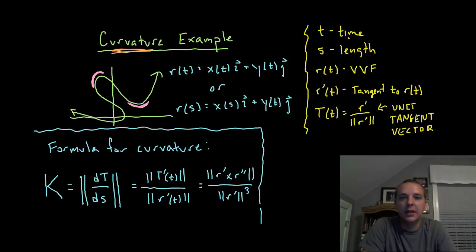A quick run down of terms: t is standing for time, s is standing for length, r of t is a vector valued function. We're going to assume you know what a vector valued function is.